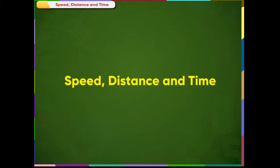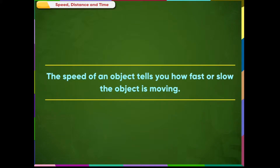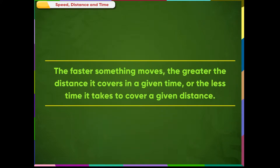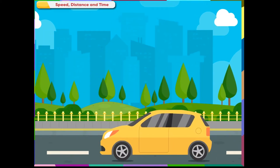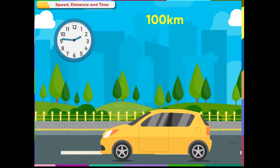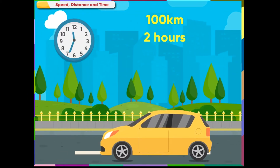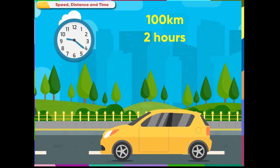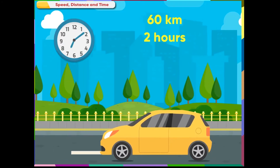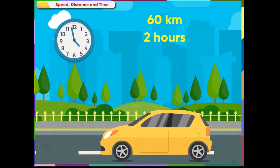Speed, Distance and Time. The speed of an object tells you how fast or slow the object is moving. The faster something moves, the greater the distance it covers in a given time, or the less time it takes to cover a given distance. For example, a car that is driven 100 km in 2 hours is going faster than one covering 60 km in 2 hours.